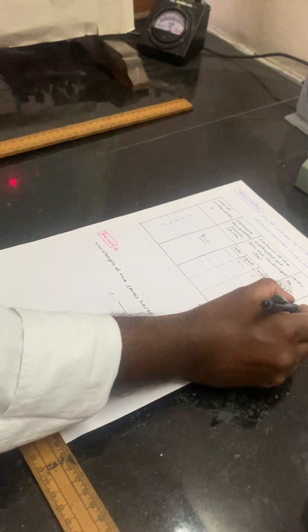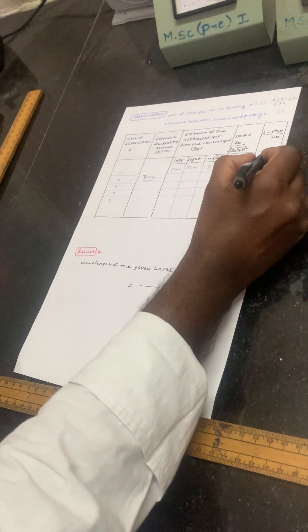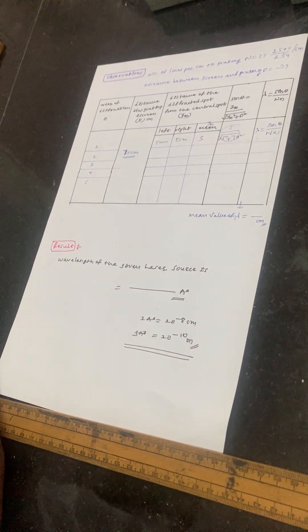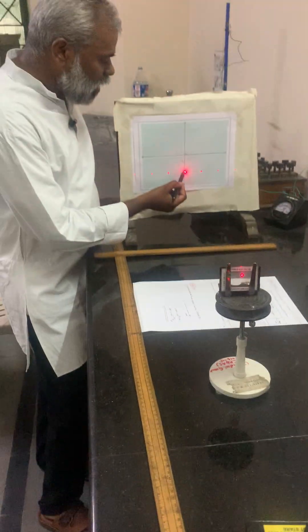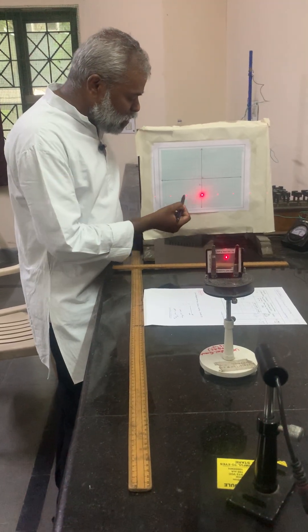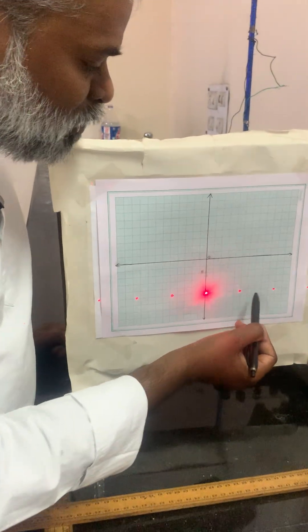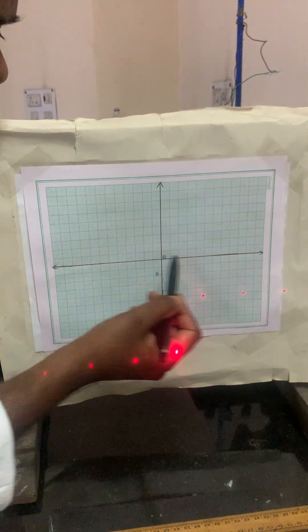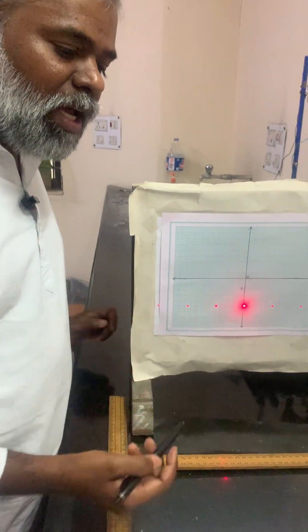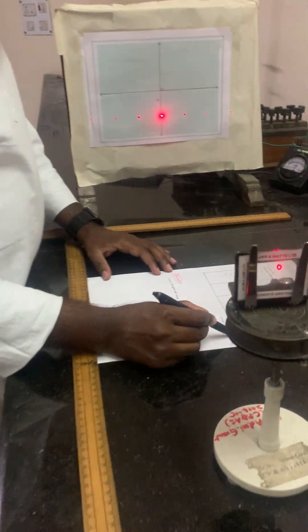Find out the lambda value by substituting sinθ, capital N, and small n (the order). For the second order, measure from the central spot to the second bright spot on the left and right, take the average as ym, and calculate sinθ. For each order you will get a lambda value, then find the mean value of lambda.